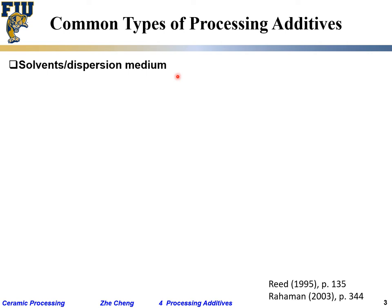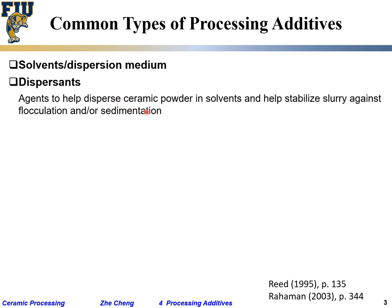Common types of additives include solvents — the liquid that gives flow capability. Dispersants help ceramic powder particles uniformly distribute in the solvents and stabilize the slurry against two things: sedimentation, where powder sinks to the bottom of your container because the density is higher than the solvent, and flocculation, where fine nano-powder particles come together and sediment quickly. Dispersants help prevent or delay these two phenomena.